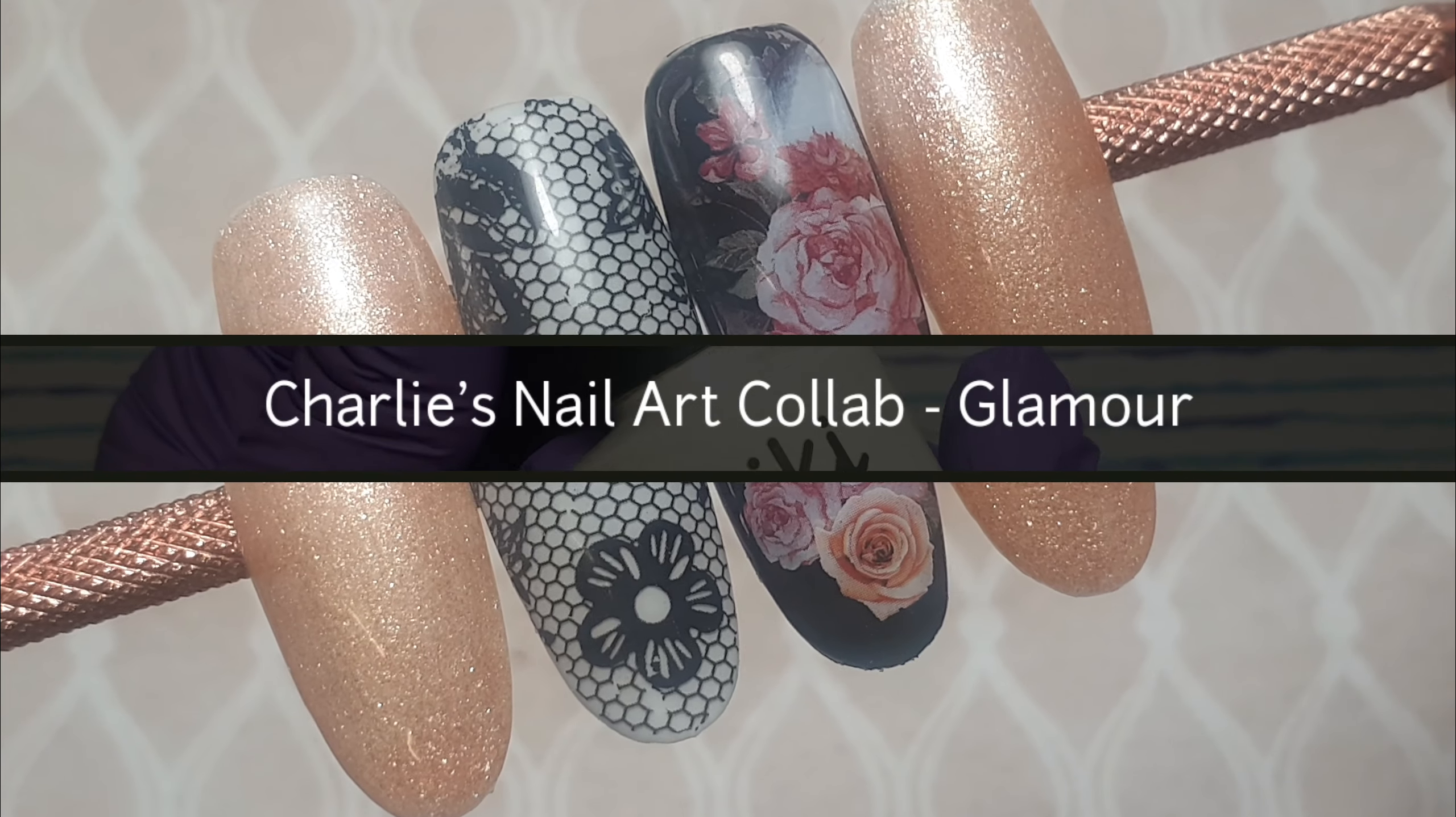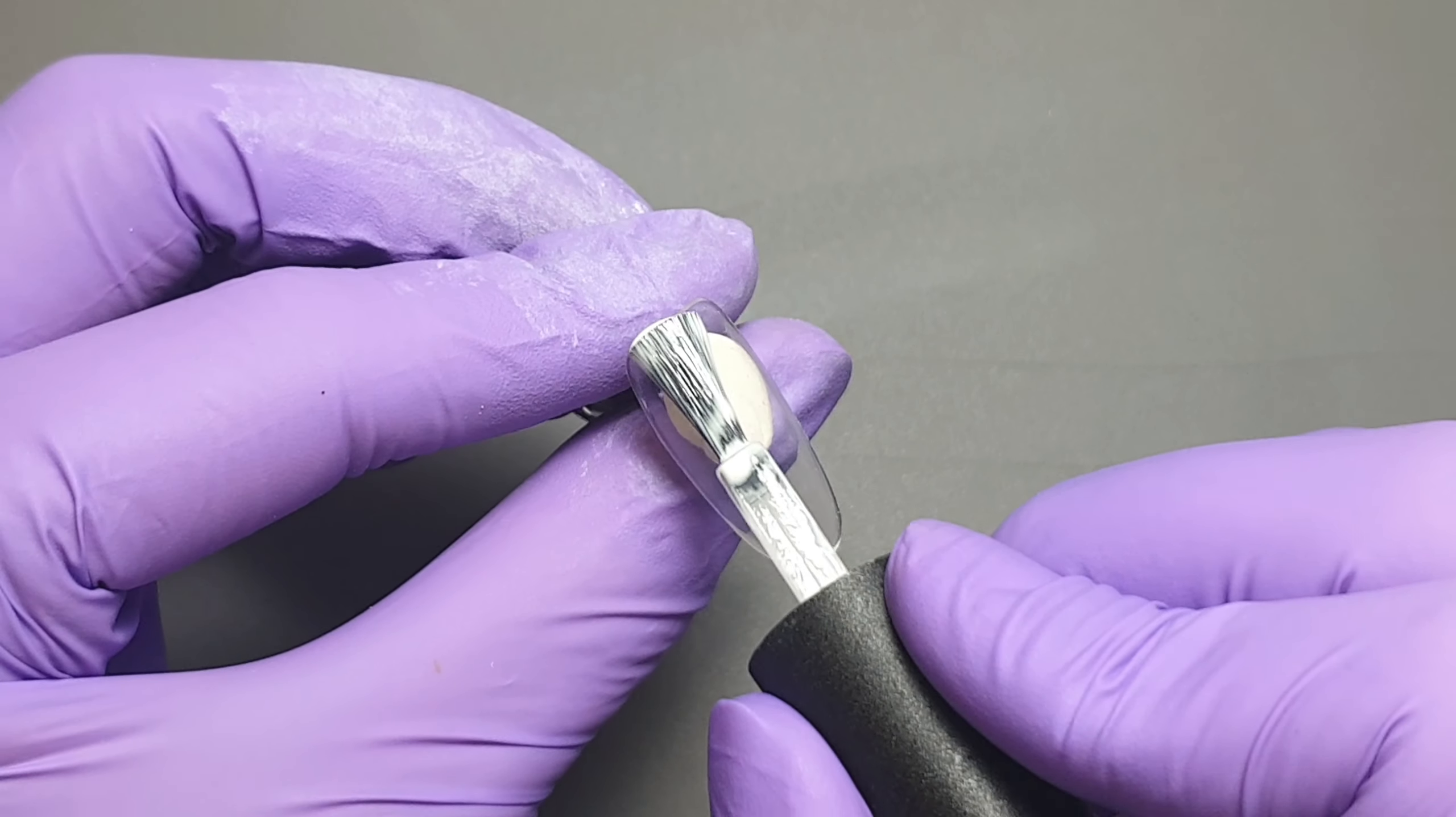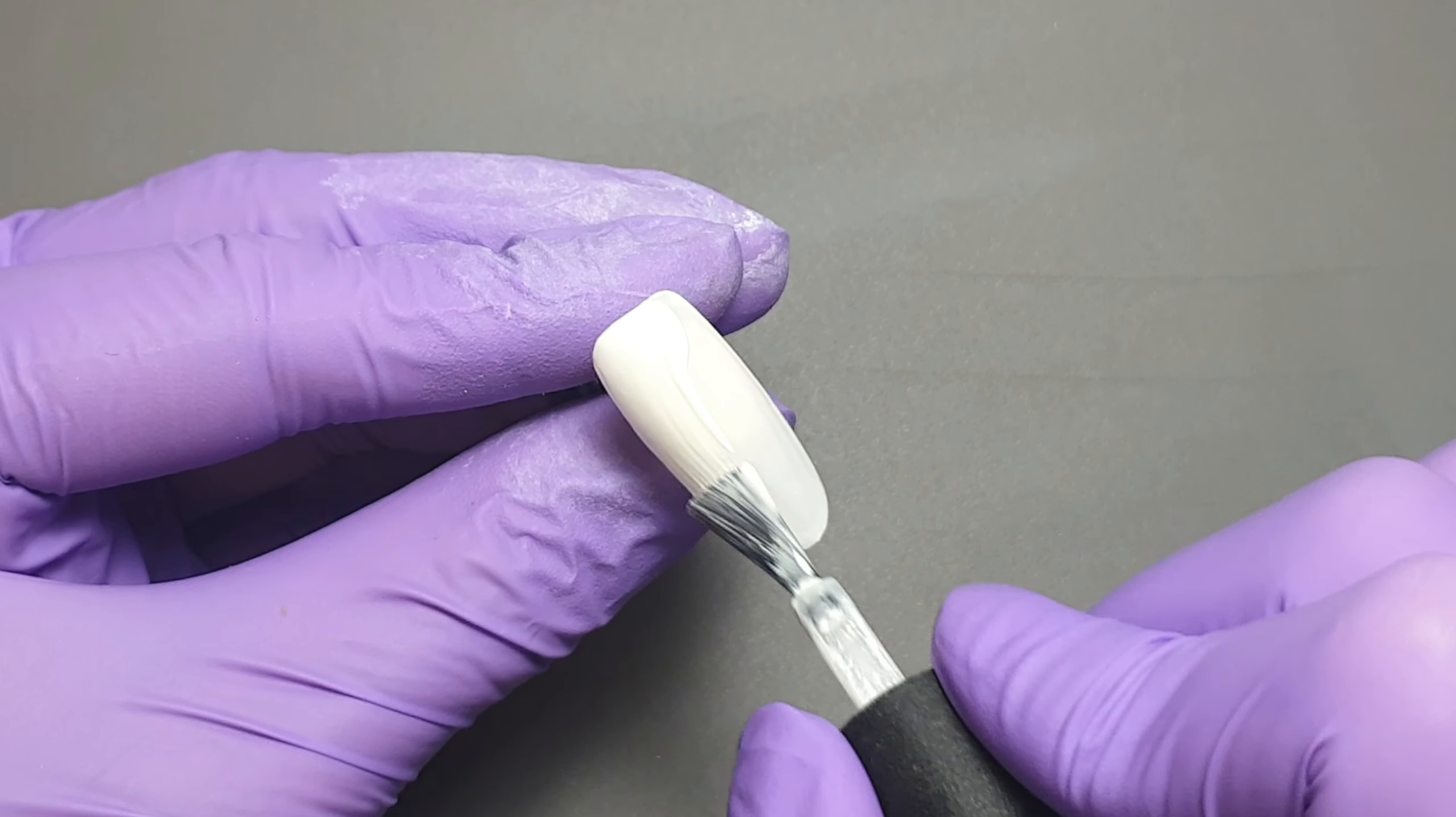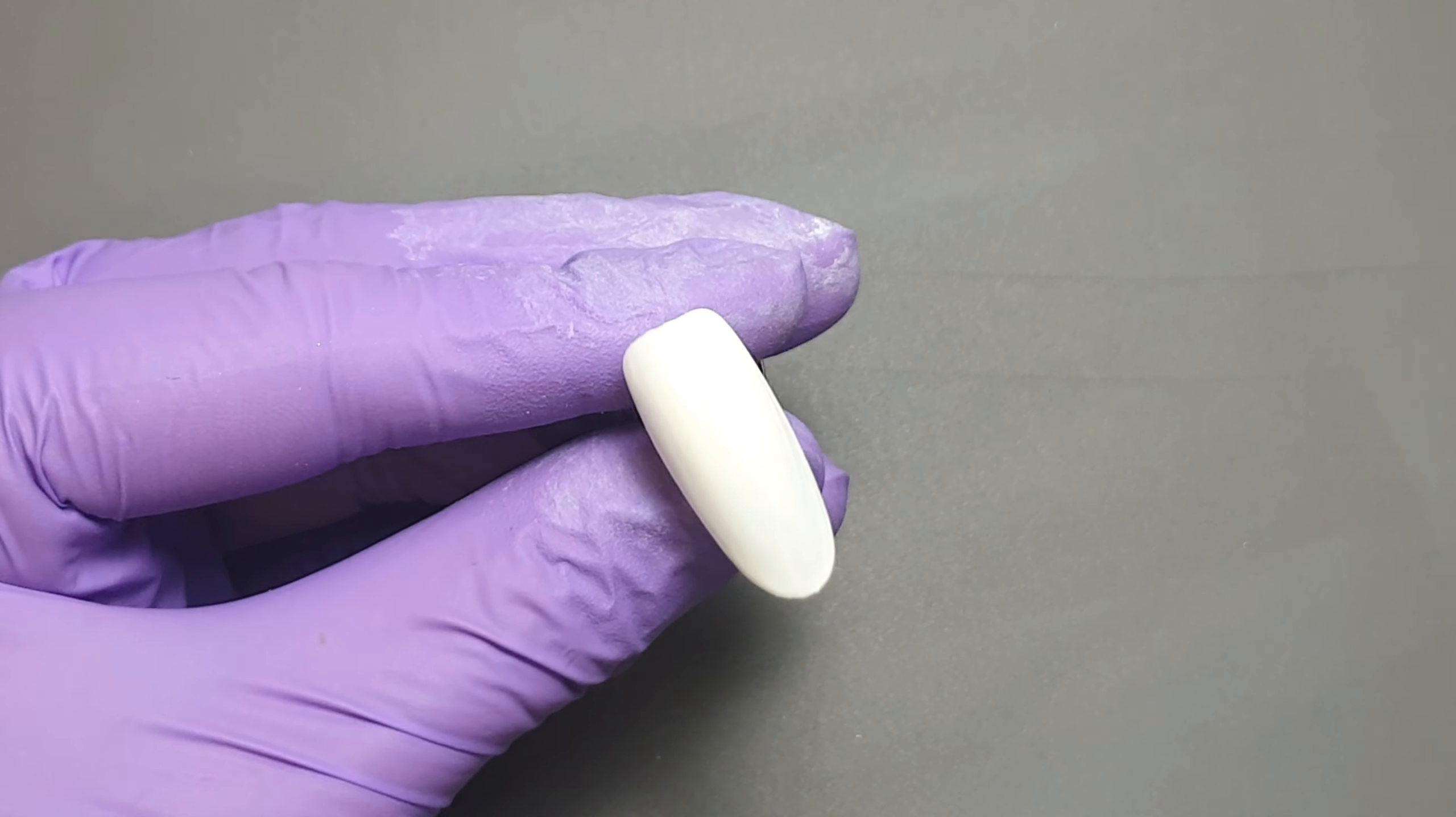To start off with, I'm going to be using Kiki London's French White and I'm using this as a base for the lace design. This white gel polish has absolutely fab coverage, you can usually get away with using just one coat, but I decided to do two coats today. I'm applying that first coat, curing for 60 seconds, then applying the second coat and again I'll pop that in to cure for 60 seconds.